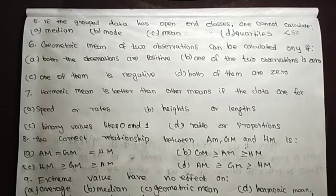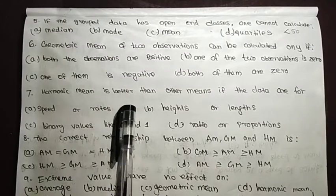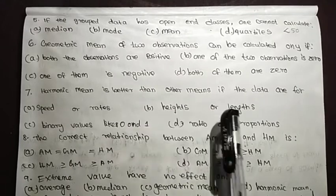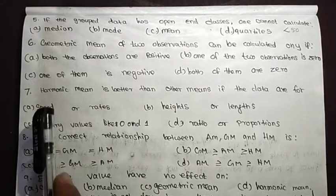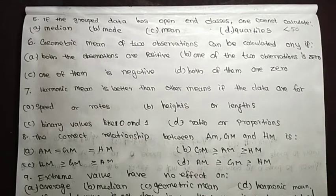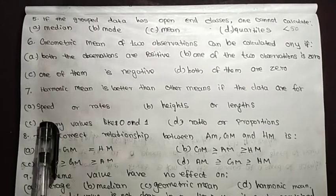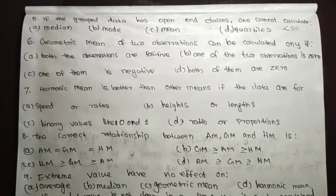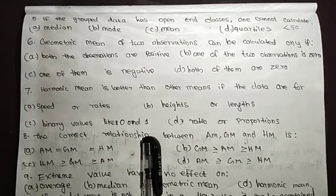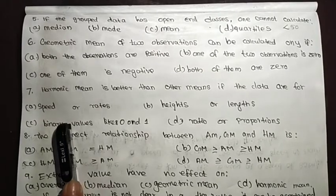Question 7: The harmonic mean is better than other means when dealing with speed or rates. The other options — height or length, binary values like 0 and 1, and ratios or proportions — are not the best fit. The answer is speed or rates.